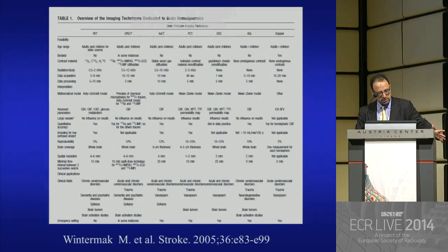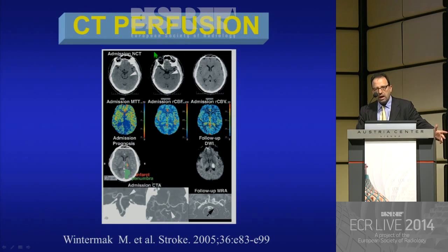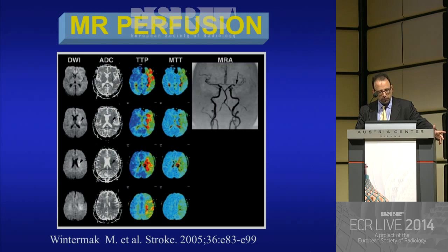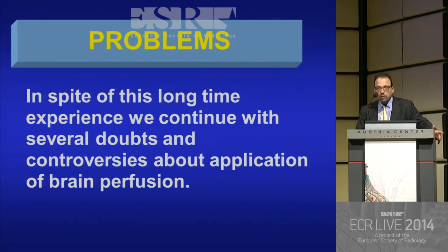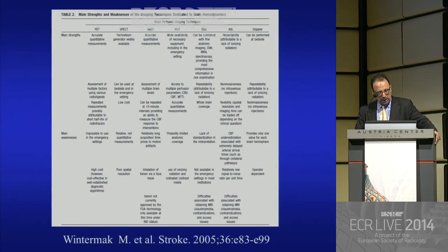But really, we have problems. We have problems because we have several techniques, and each technique has good points and weaknesses. As radiologists, we use CT perfusion or magnetic resonance perfusion. We have experience about that, but also about the problems and doubts. Any radiologist can face doubts using perfusion in daily practice. There are several papers talking about the main strengths and weaknesses of perfusion.